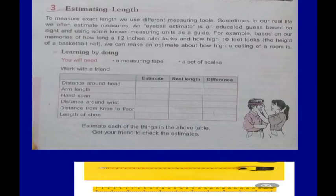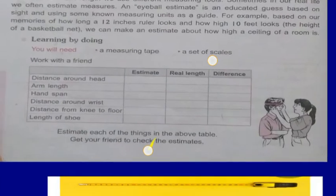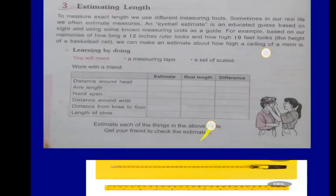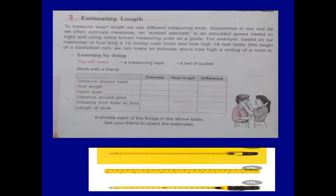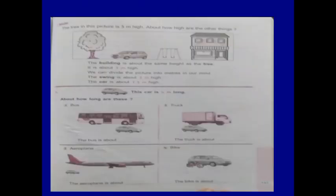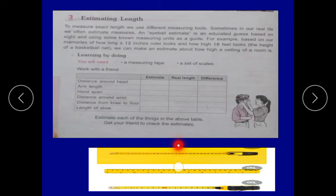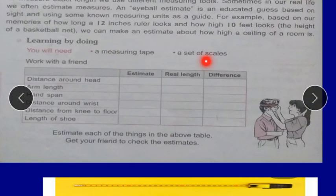But when we use a scale and measure the book, the number we get is said to be the real length — the accurate length. For the practical activity, you will need a measuring tape. Here you can see different types of measuring tape shown in the picture. A set of scales or a measuring tape is required to know the accurate or real length. Real length means accurate length, and the estimated length is that the length is around a certain number — not the real length.